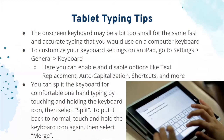A couple of tips for tablet typing: the on-screen keyboard may be a bit too small for fast and accurate typing compared to a computer keyboard. You can customize the keyboard settings, and you can split the keyboard into two different parts if it's more comfortable for one-hand typing. All you have to do is touch and hold the keyboard icon and select Split. To put it back to normal, touch and hold the keyboard icon again and select Merge.